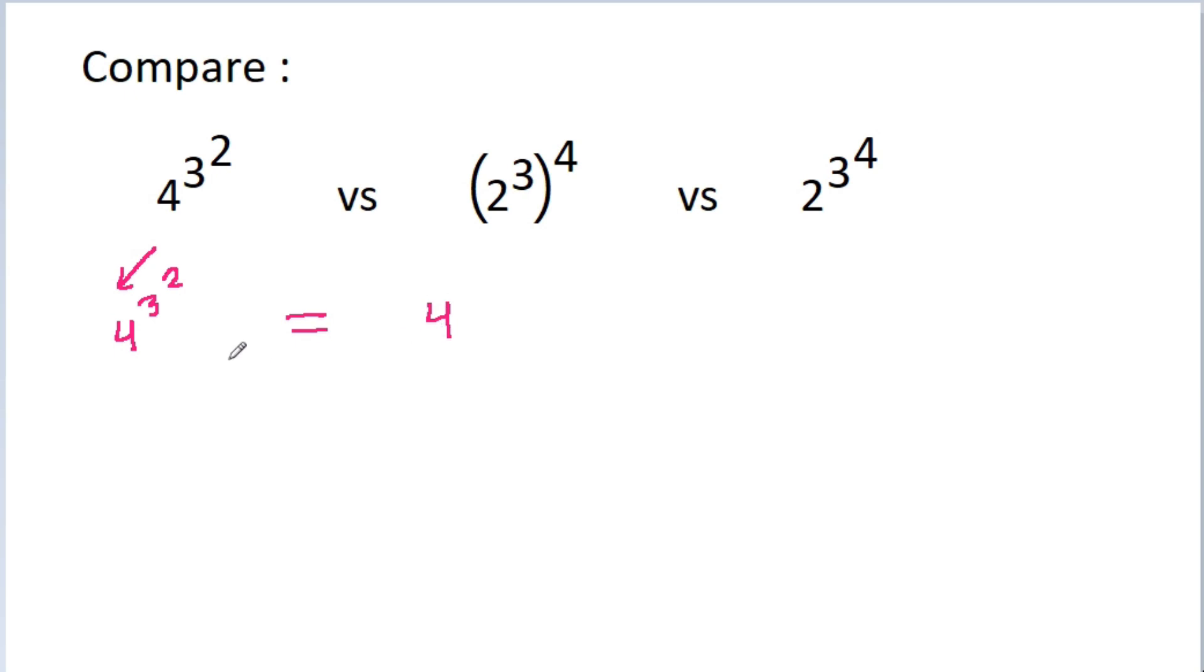It will be equal to 4^9, since 3^2 = 9. And 4 is 2^2, so we have (2^2)^9. When we have brackets, we multiply the powers. So it will be equal to 2^(2×9), which is 2^18.